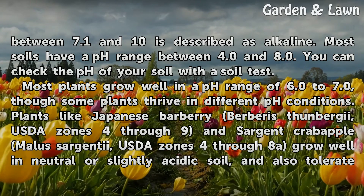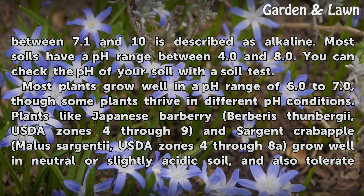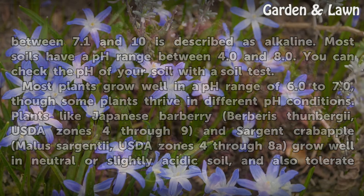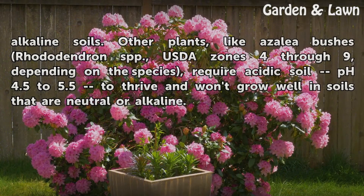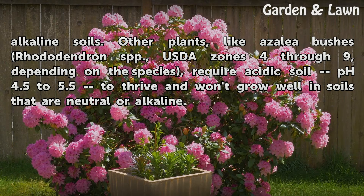Most plants grow well in a pH range of 6.0 to 7.0, though some plants thrive in different pH conditions. Plants like Japanese barberry (Berberis thunbergii, USDA zones 4 through 9) and Sargent crabapple (Malus sargentii, USDA zones 4 through 8) grow well in neutral or slightly acidic soil and also tolerate alkaline soils. Other plants, like azalea bushes (Rhododendron spp., USDA zones 4 through 9), require acidic soil (pH 4.5 to 5.5) to thrive and won't grow well in neutral or alkaline soils.